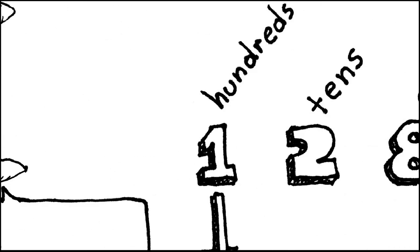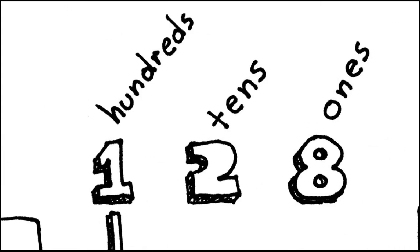Now let's take a look at this number we have right here: one, two, and eight. The one is in the hundreds place, the two is in the tens place, and the eight is in the ones place. It's important to know which place values they're in, because that helps us know what rules we need to use to say numbers.